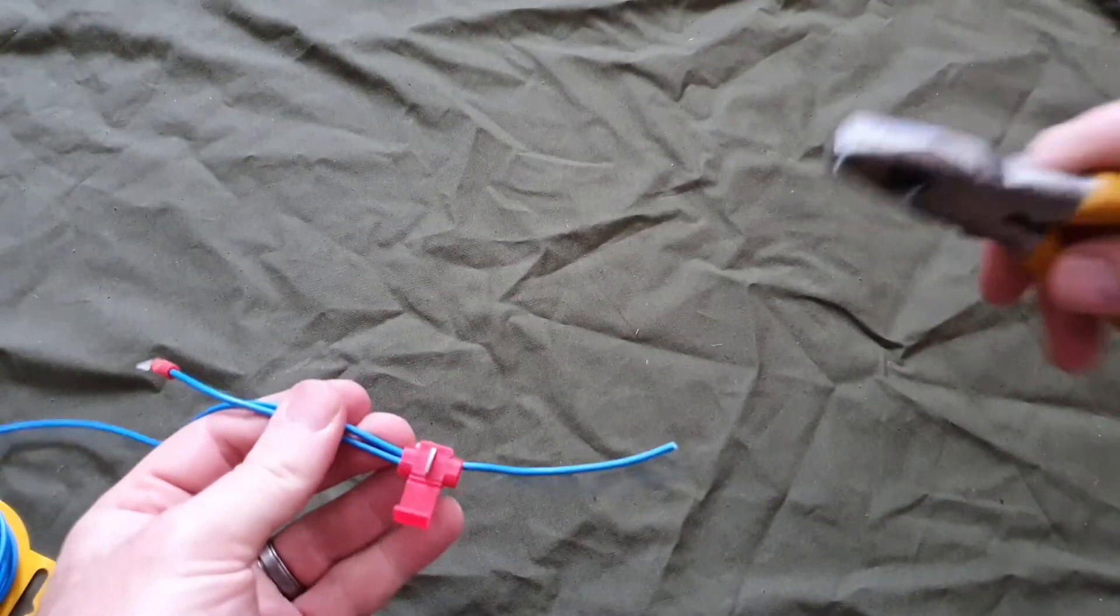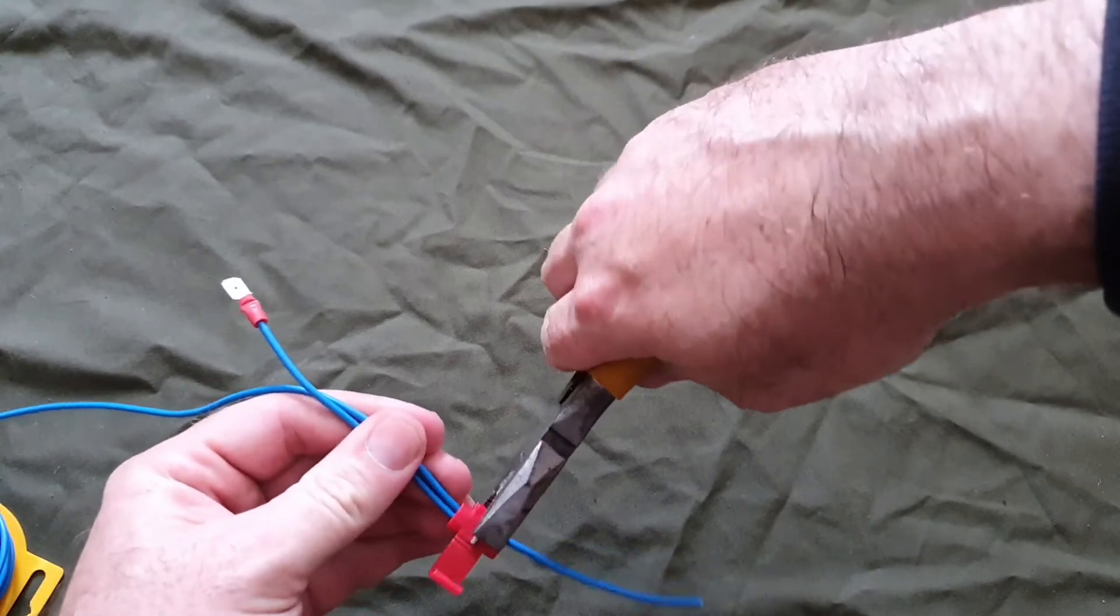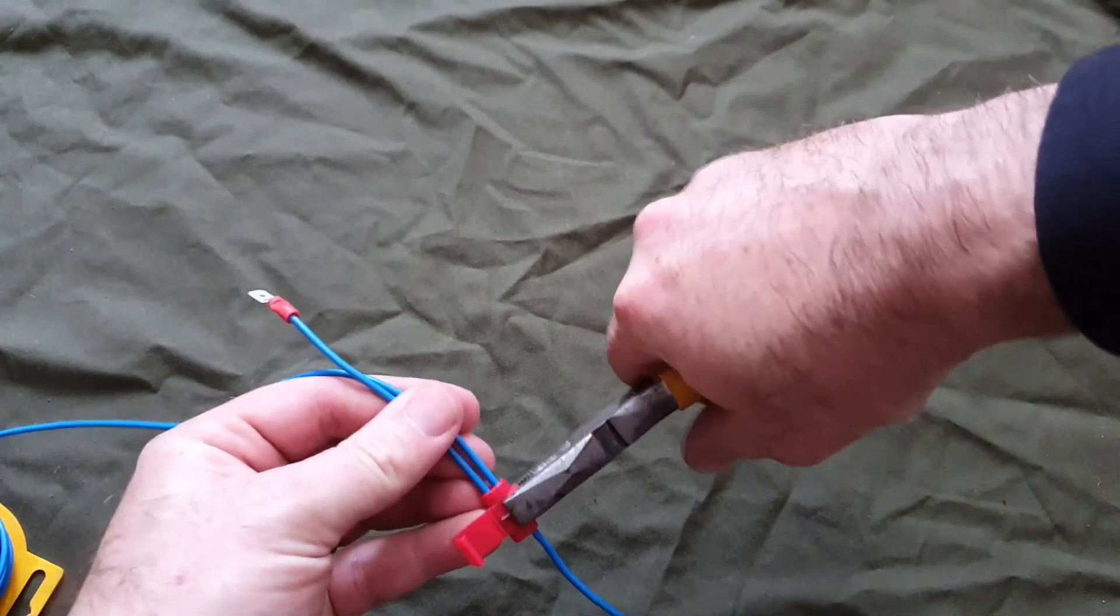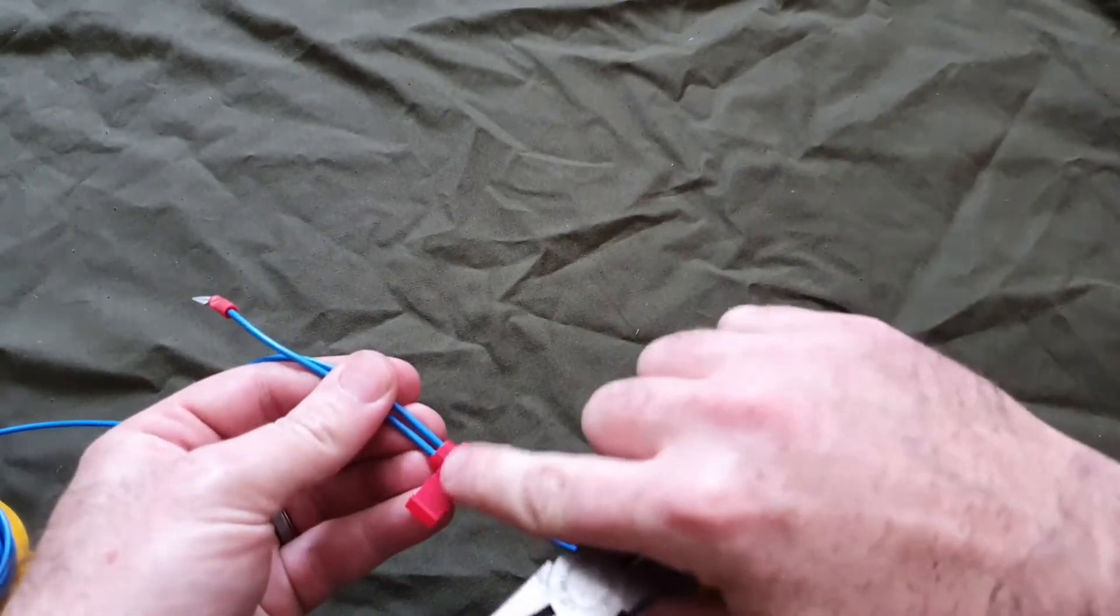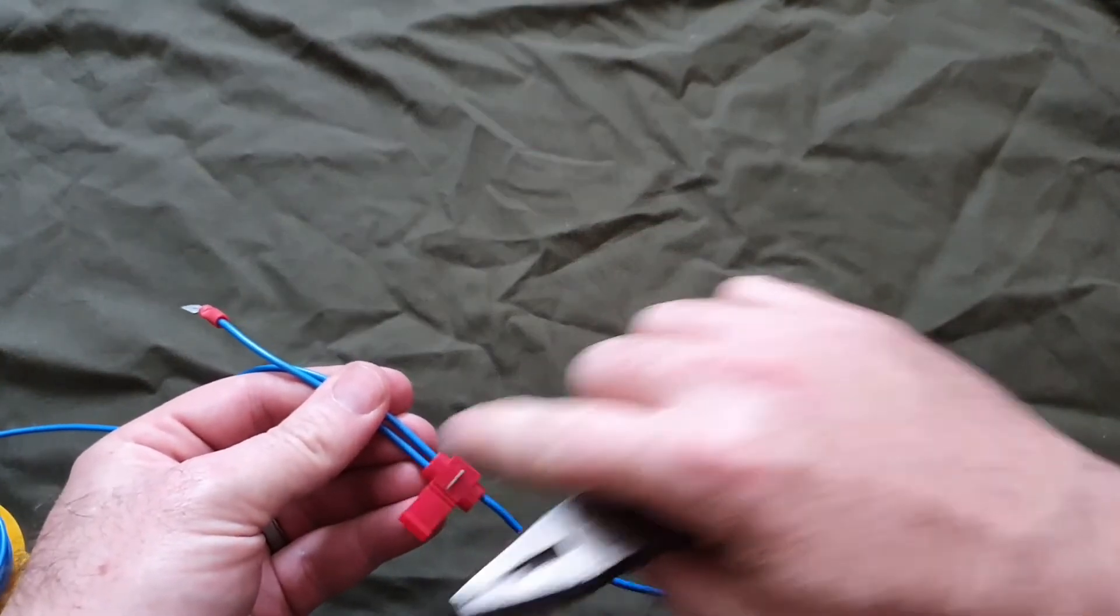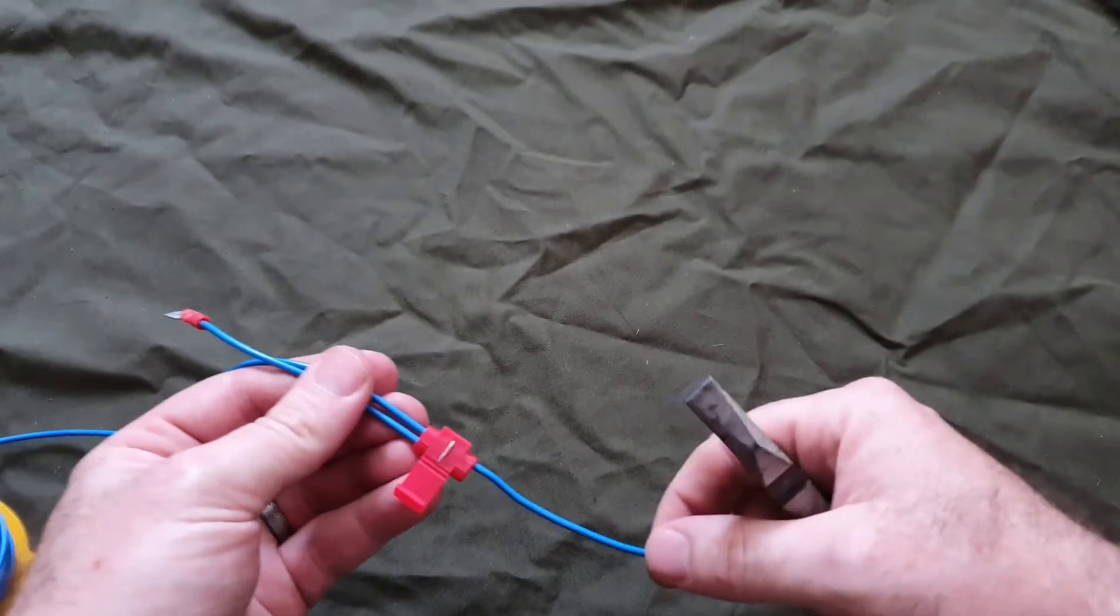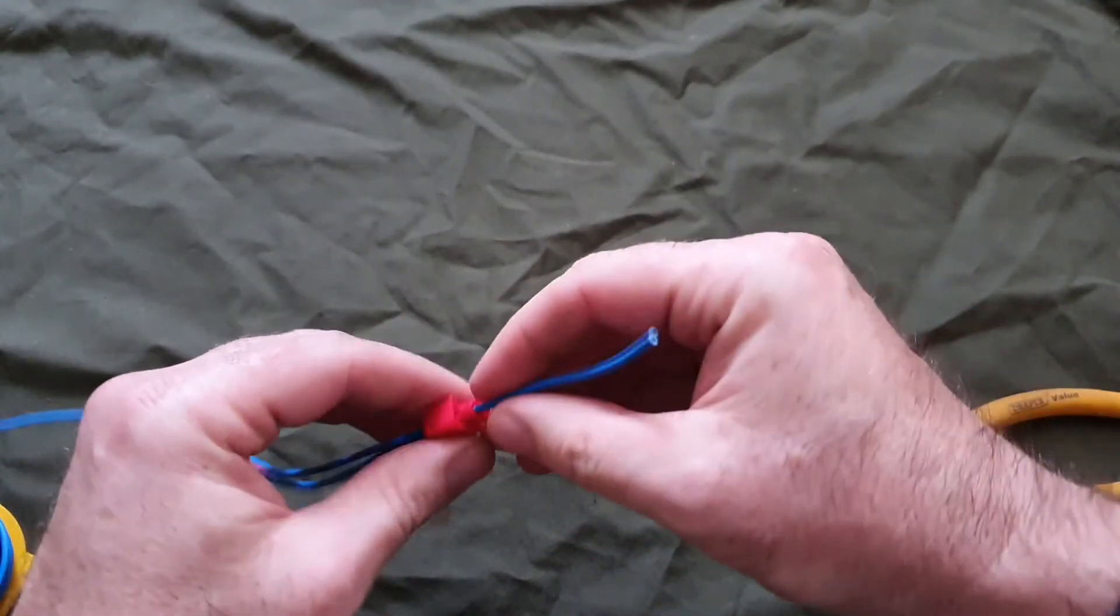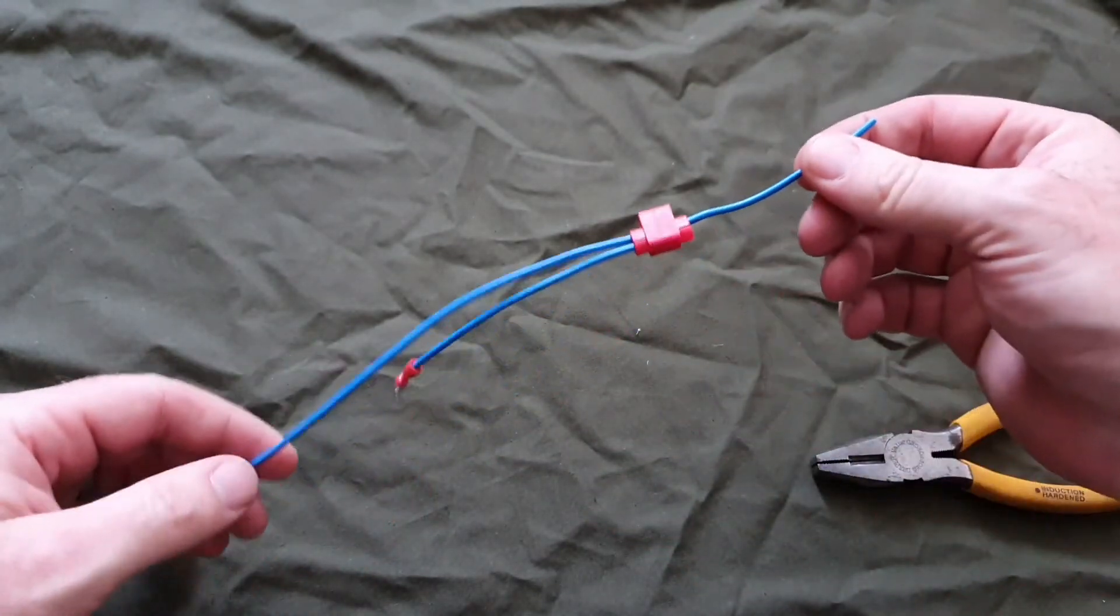Simply get a pair of pliers and squeeze down, and that forces that plate. Now it connects both those wires together into this one, and then to secure, just roll that over and click. Job done.